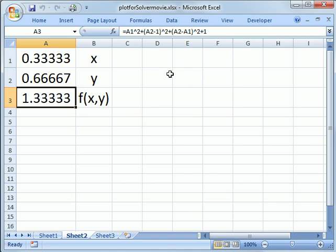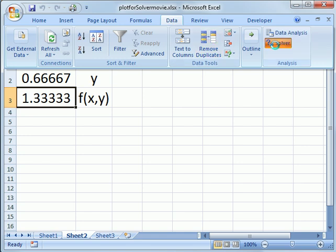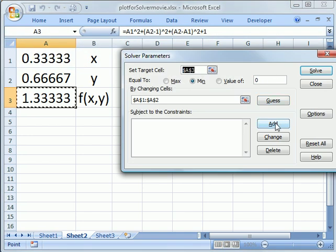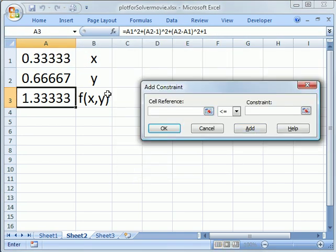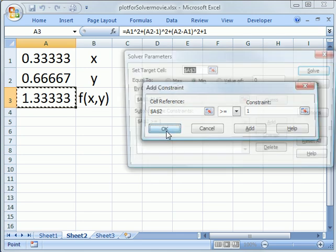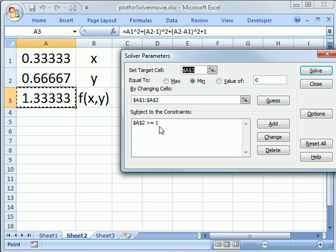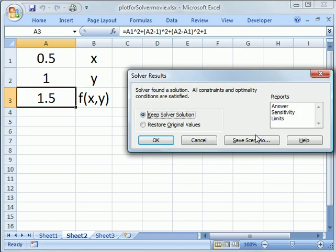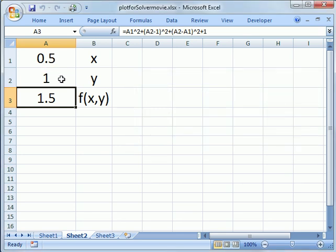Now suppose we want to do the second one where we want to constrain y. We go back to the solver, and now we want to add a constraint. We want to constrain cell A2 to be greater than or equal to one. We say okay, and now that constraint is in this box, and now we click Solve again. Okay, it says Solver found a solution, okay, and now the minimum we get is one and a half at x equals a half and y equals one.